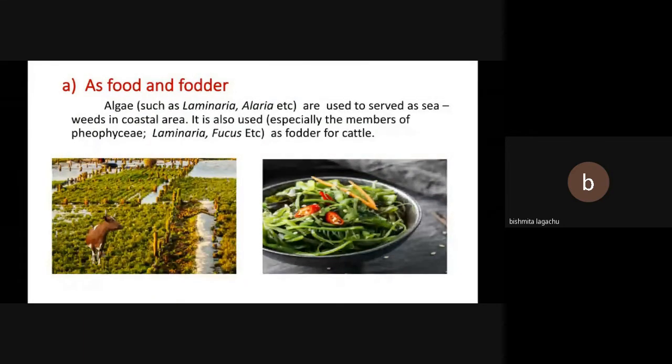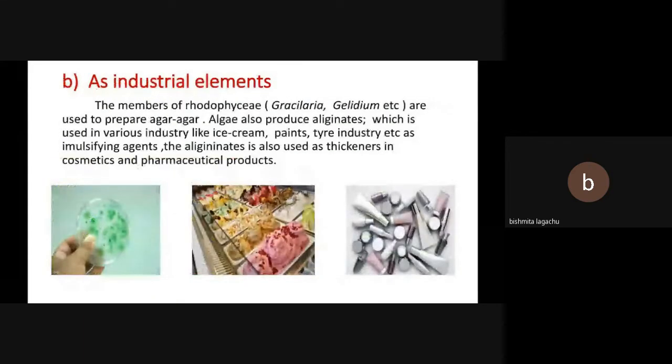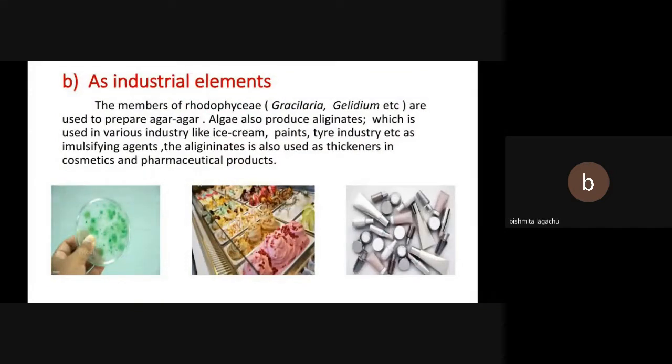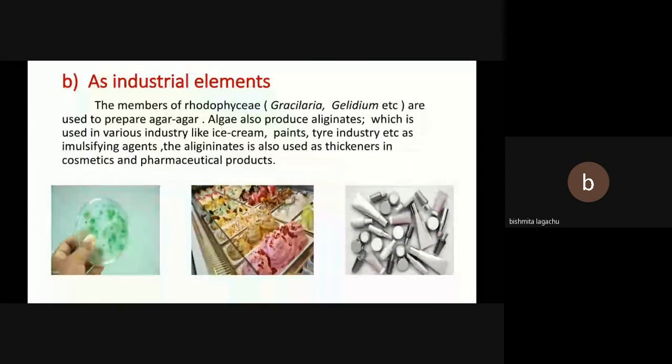Next point is as industrial elements. How we use algae? The members of Rhodophyceae, for example Gelidium, Gracilaria, etc. are used to prepare agar-agar. As we know, agar-agar is used as a thickener in soups and in culture media for culturing bacteria or microbes.